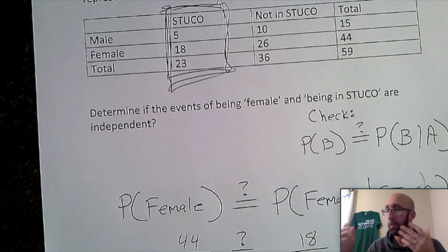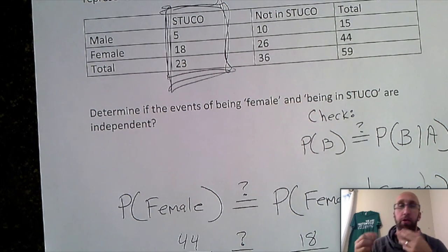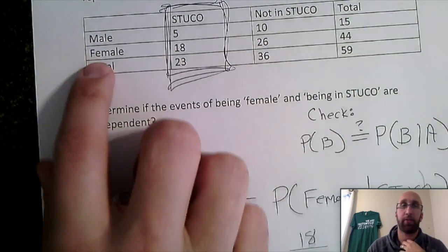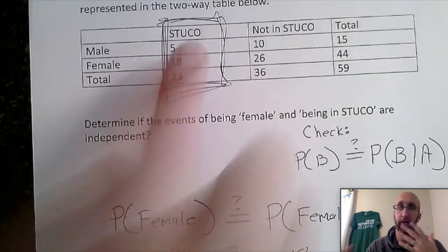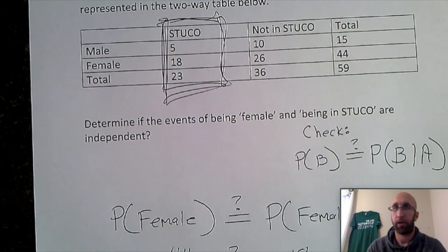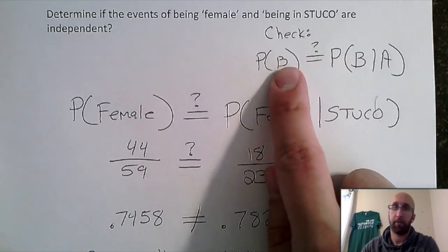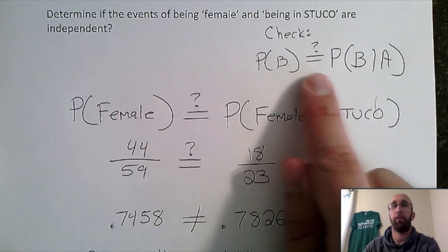So in this situation, knowing that the student is female definitely is going to influence and change your ideas of whether they're in STUCO or not. And how we check that, well you're just checking probability of B, is that equal to the probability of B given A.